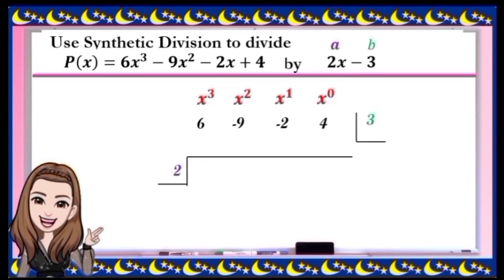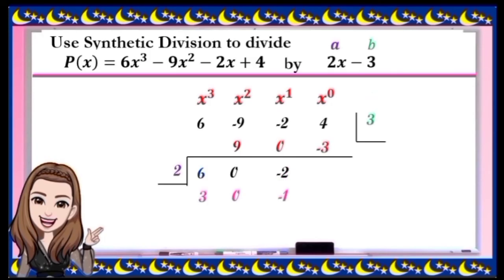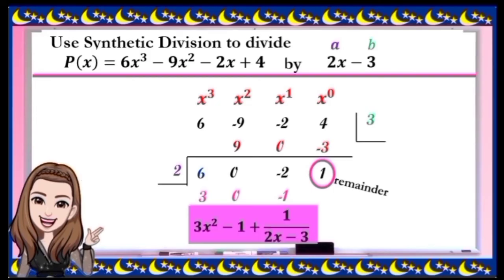Follow the steps: bring down 6, divide by 2 — we have 3. Multiply by 3 — we have 9. Add negative 9 and 9; the result is 0. Then 0 divided by 2 is 0; 0 times 3 is 0. Negative 2 plus 0 is negative 2; divided by 2 gives negative 1; negative 1 times 3 is negative 3. For the last column, add 4 and negative 3; the result is 1. So the remainder is 1. Our dividend is in the third degree and divisor in the first degree, so the quotient must be in the second degree. The final answer is 3x² + 0x - 1 + 1/(2x - 3).